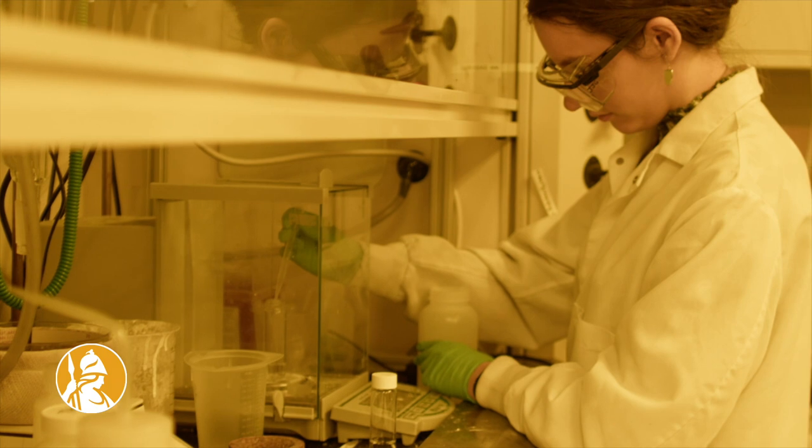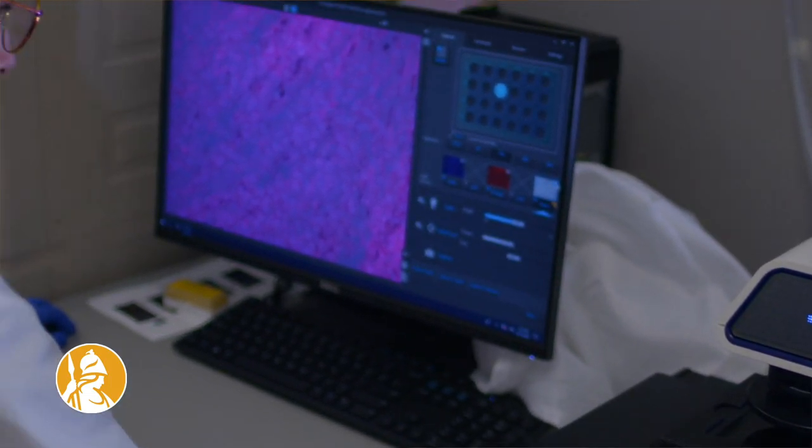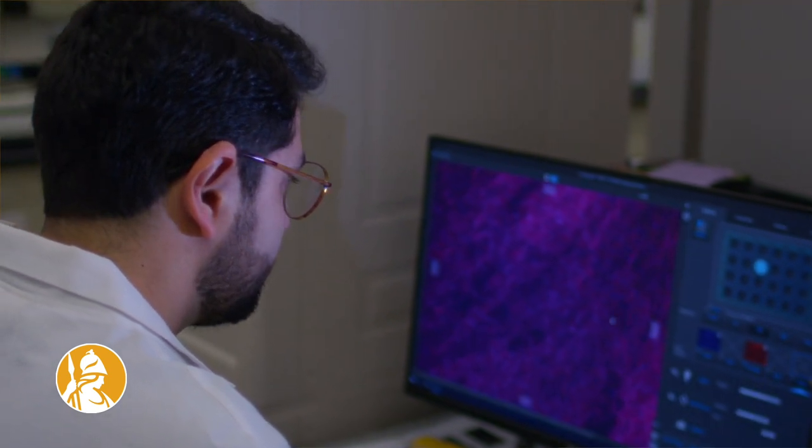Organoids are basically a model organism and they're a lot easier to make than an artificial organ. So basically you can kind of choose, I want to model this part of an organ.